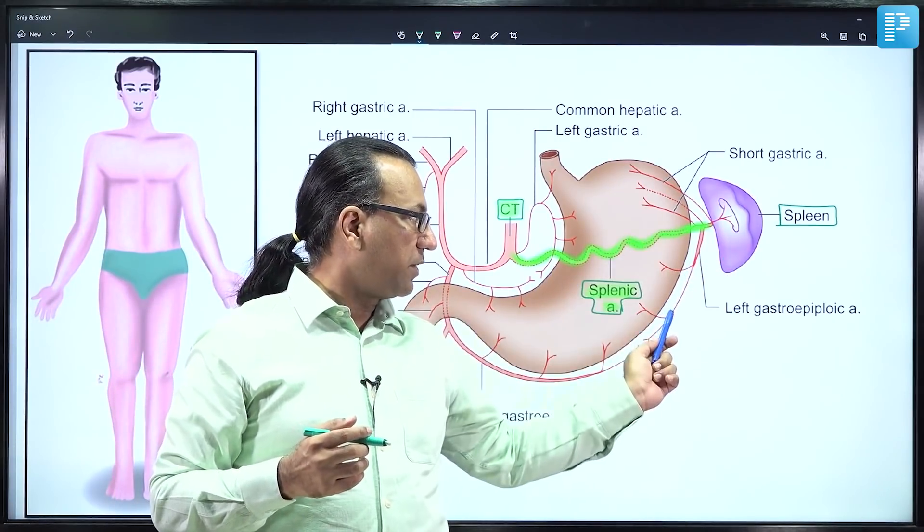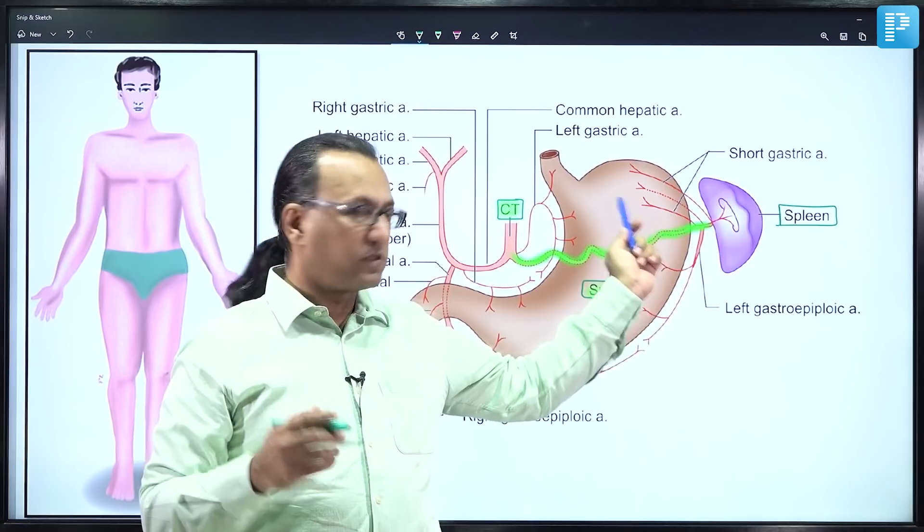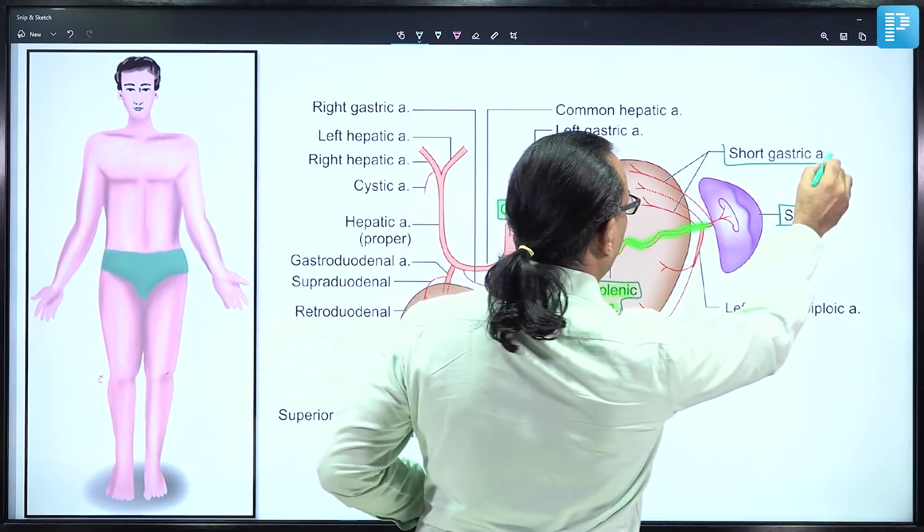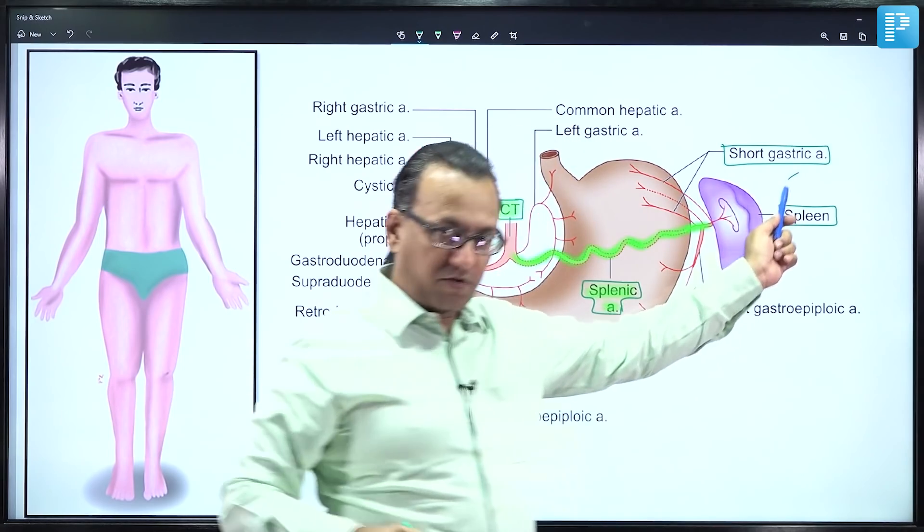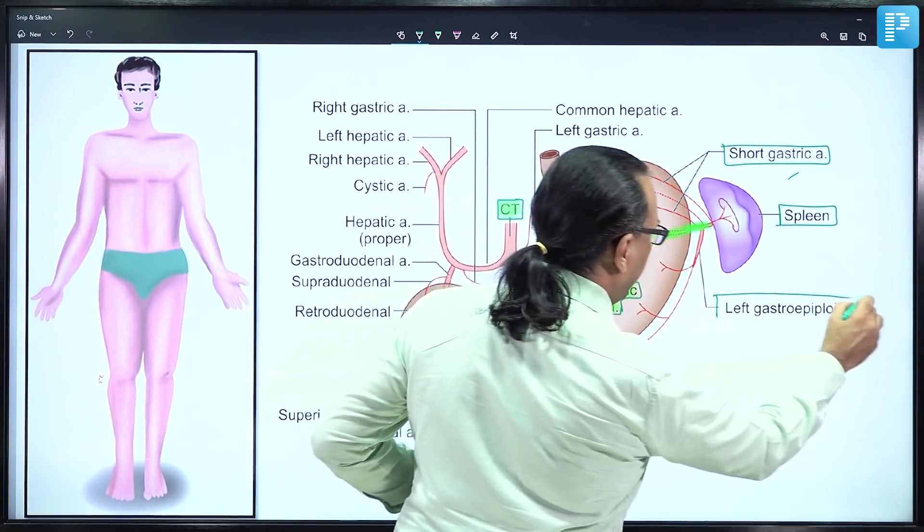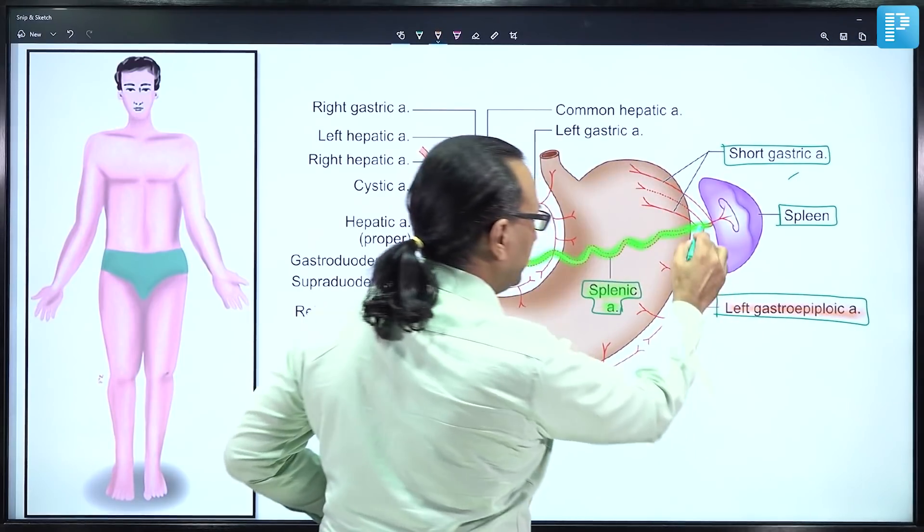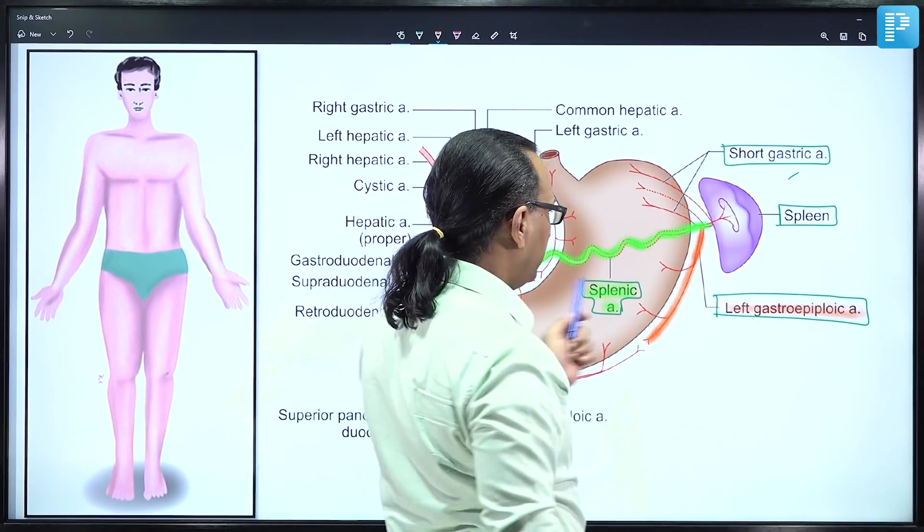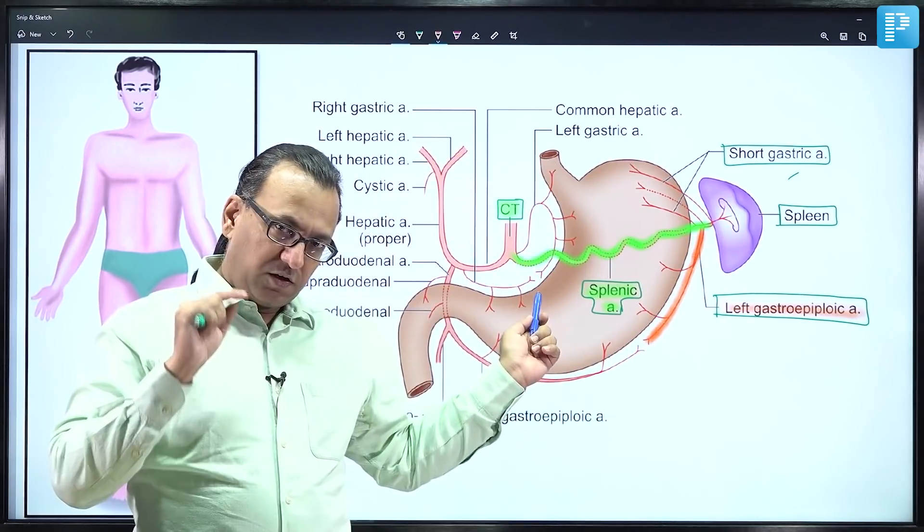These include the short gastric artery to the greater curvature and fundus of the stomach, and the left gastroepiploic artery, which runs along the greater curvature of the stomach.